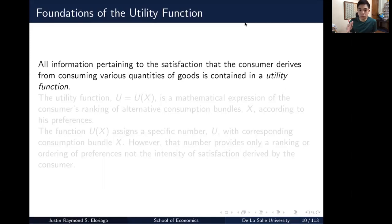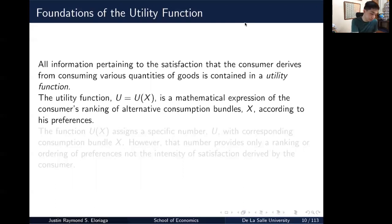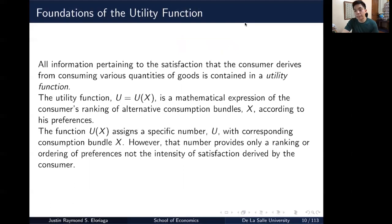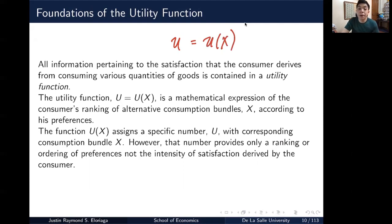A utility function contains all information pertaining to the satisfaction that the consumer derives from consuming various quantities of goods. A particular combination of goods will yield some utility value, which you can plug into the utility function and it will return that level. Technically, the utility function is U as some function of X, where X represents your consumption bundles containing individual quantities of each good. It is a mathematical expression of the consumer's ranking of alternative consumption bundles according to preferences, assigning a specific number U that provides only a ranking or ordering of preferences, not the intensity of satisfaction.